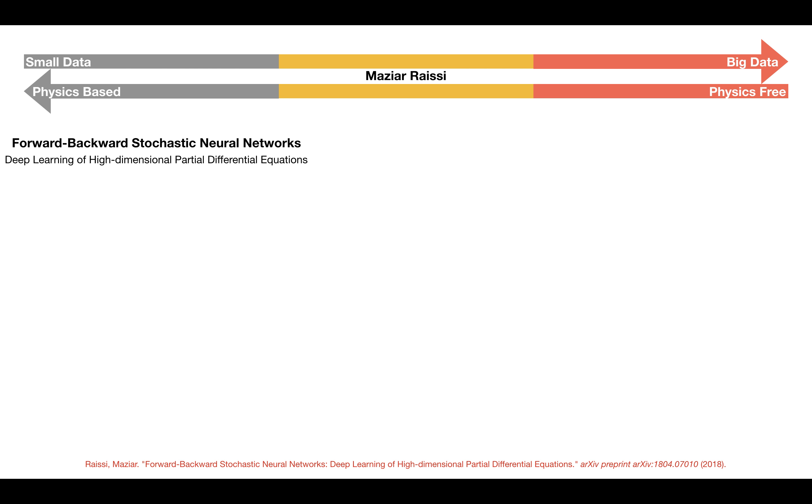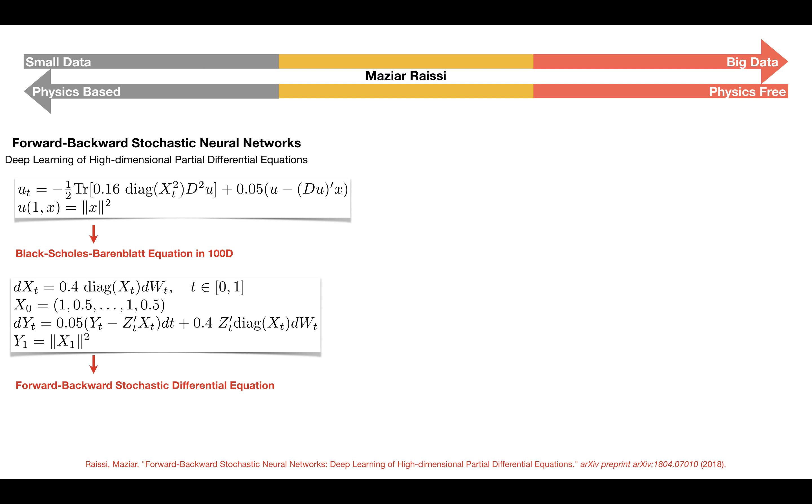To study the performance of the proposed algorithm, let us consider a 100-dimensional Black-Scholes-Barenblatt equation. This equation corresponds to the following forward-backward stochastic differential equation. The Black-Scholes-Barenblatt equation admits the following explicit solution, which can be used to test the accuracy of the proposed algorithm.